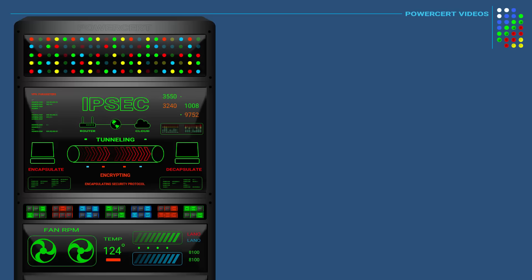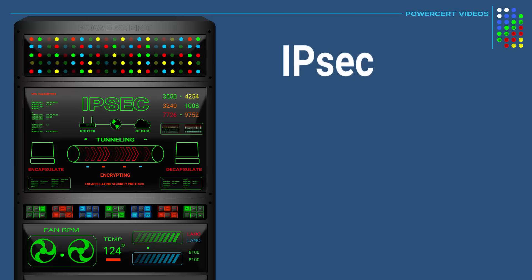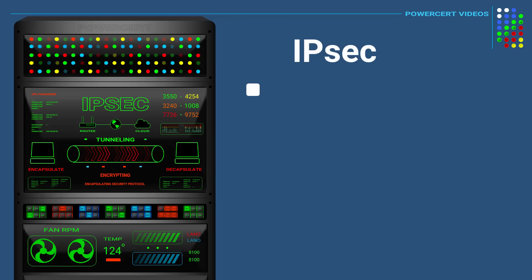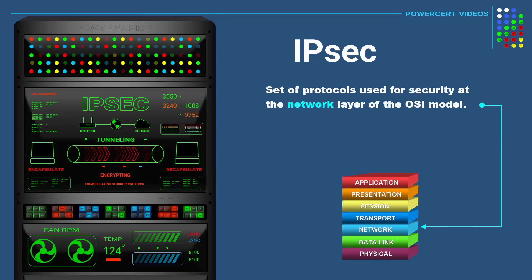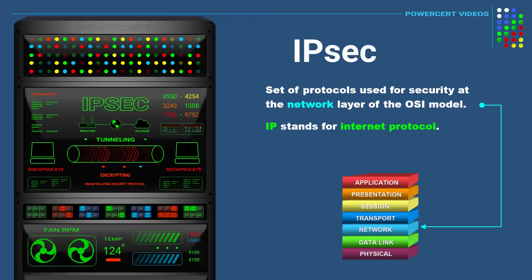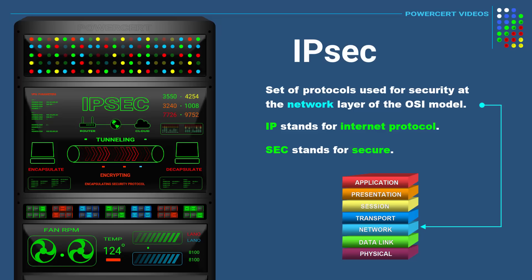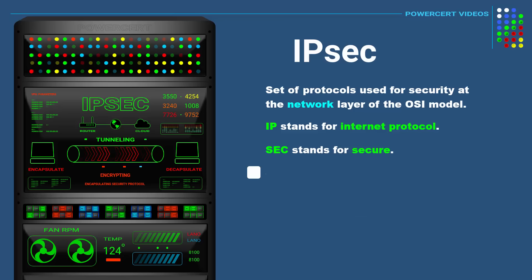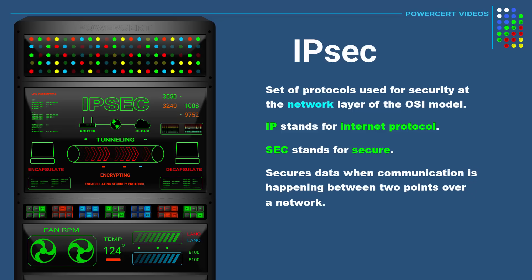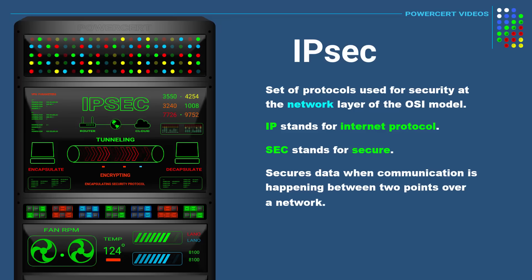In this video we're going to be talking about IPsec. IPsec is a set of protocols for security at the network layer of the OSI model. The IP stands for Internet Protocol, which is what the internet uses to route data by using IP addresses. And the SEC stands for secure, which is exactly what IPsec does. It secures the data when communication is happening between two points over a network, and it does this by adding encryption and authentication.